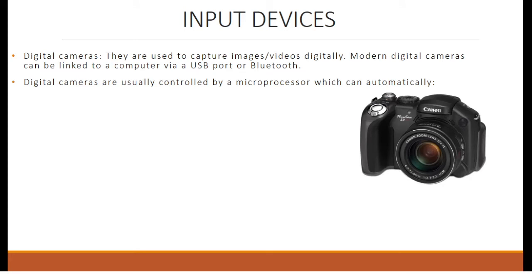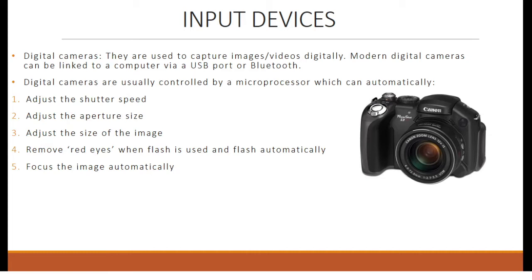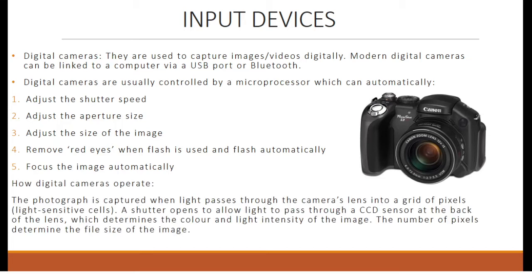Digital cameras are used to capture images and videos digitally. Modern digital cameras can be linked to a computer via USB or Bluetooth; in fact, almost every camera we use today is a digital camera. They are usually controlled by a microprocessor which can automatically adjust the shutter speed, aperture size, and image size, remove red-eye when flash is used, and focus the image automatically. A photograph is captured when light passes through the camera's lens into a grid of pixels or light-sensitive cells. A shutter opens to allow light to pass through a CCD sensor, which determines the color and light intensity. The number of pixels determines the file size of the image.